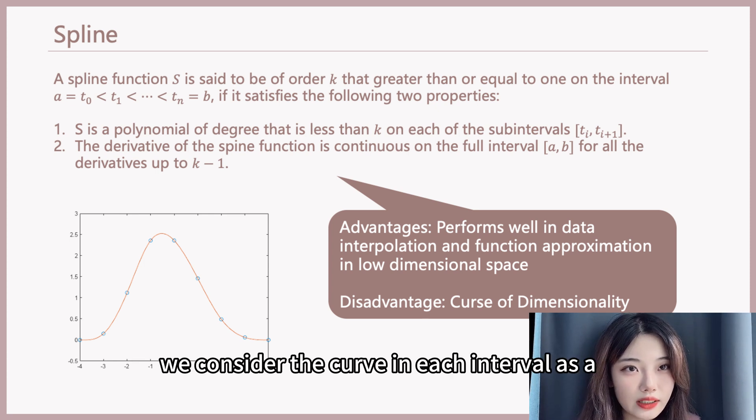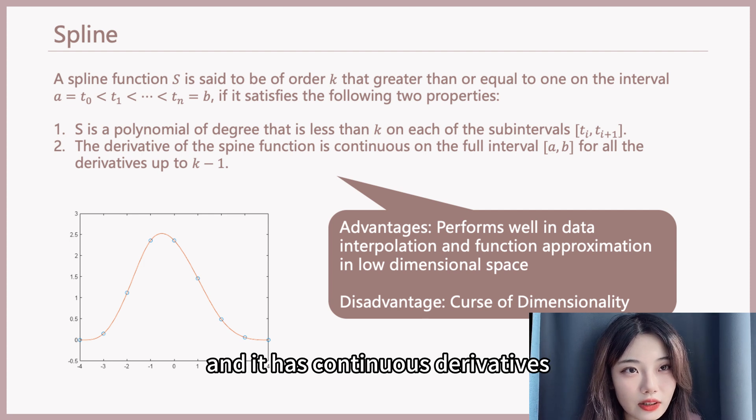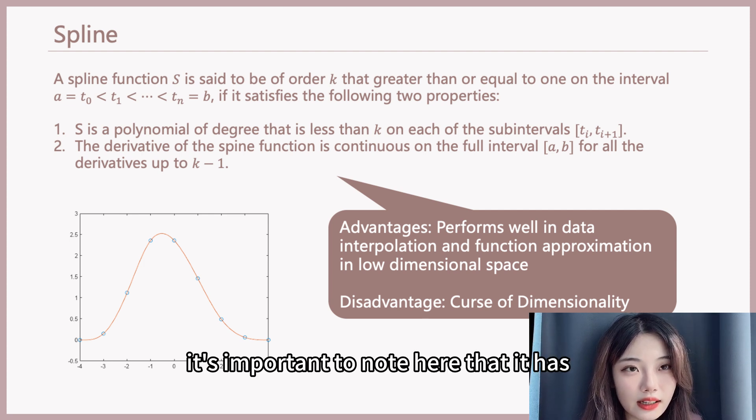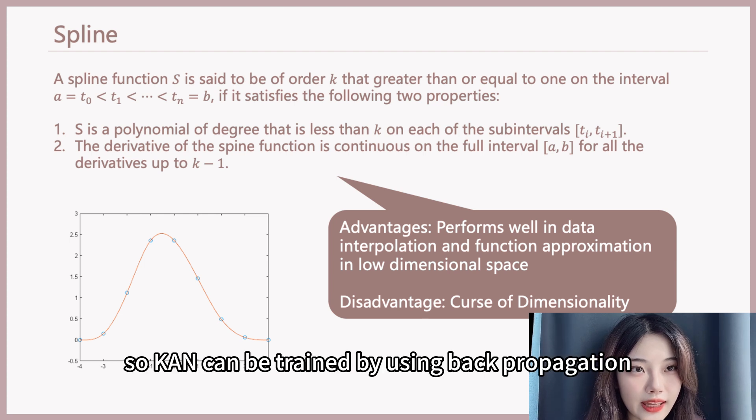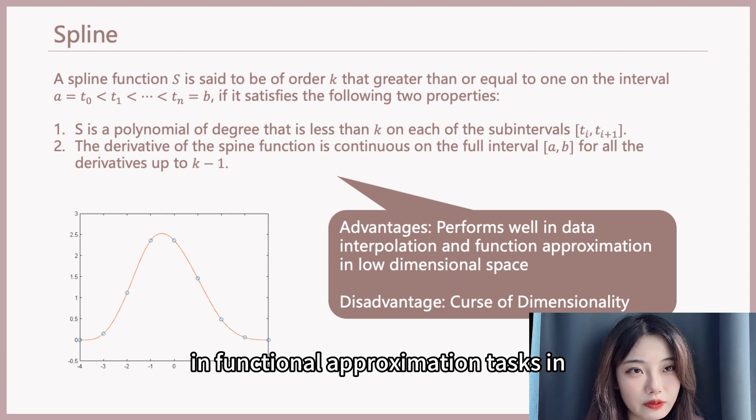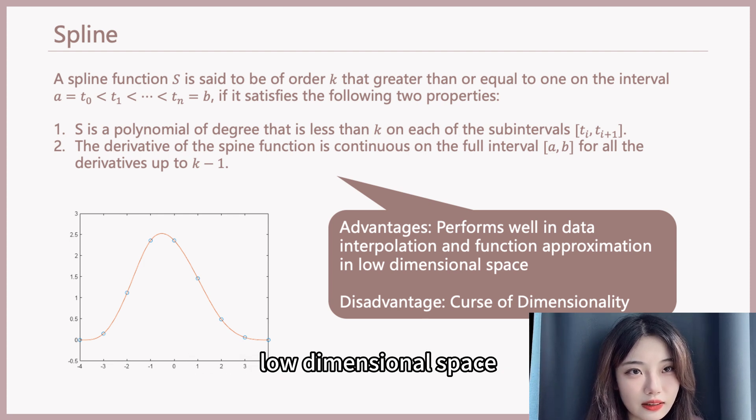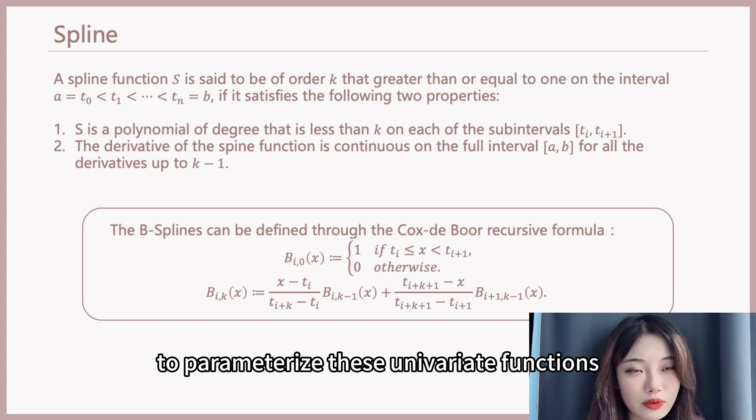We consider the curve in each interval as a k-degree polynomial, and it has continuous derivatives. It's important to note here that it has continuous derivatives, so KAN can be trained by using backpropagation. Spline functions generally perform well in functional approximation tasks in low-dimensional space. So KAN chose to use B-spline functions to parameterize these univariate functions.